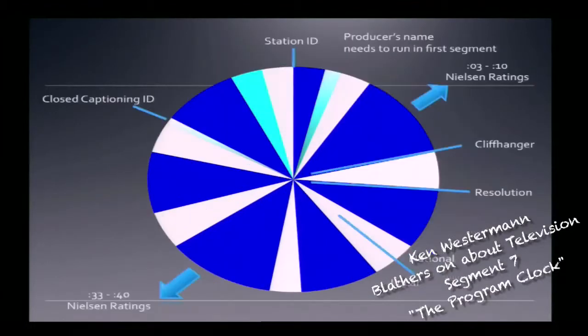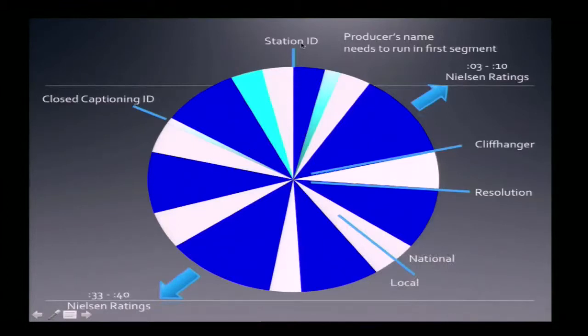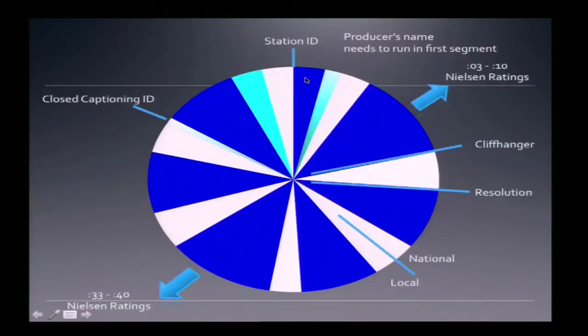This pie chart shows essentially an hour of television programming. Station ID comes right at the top of the program — it is required by law. They must put a station ID at the top of the hour stating the channel, the call sign, and the city. For example, KOMO Channel 4 Seattle, KING Channel 5 Seattle. Also in that first segment, the producer's name must run — that's by SAG (Screen Actors Guild) contract, which says their name must appear in the first segment.